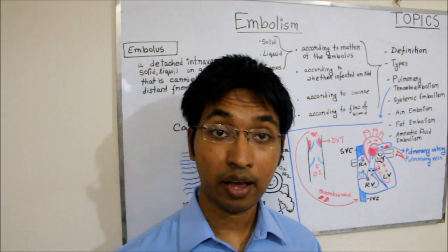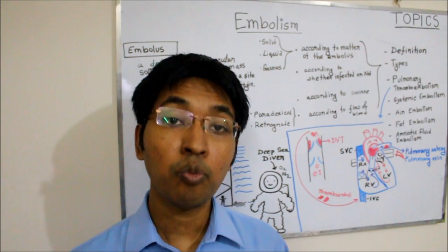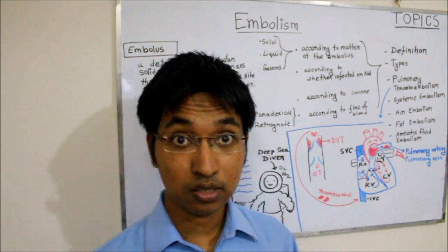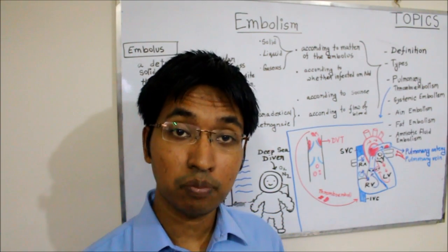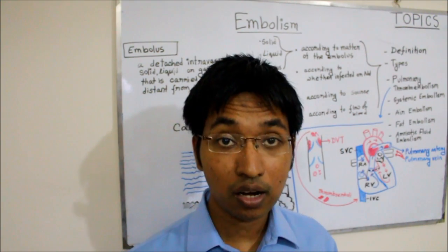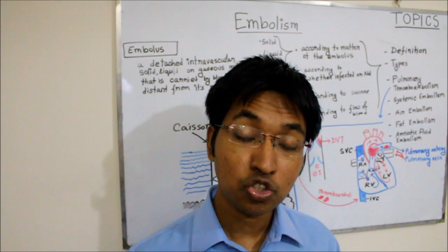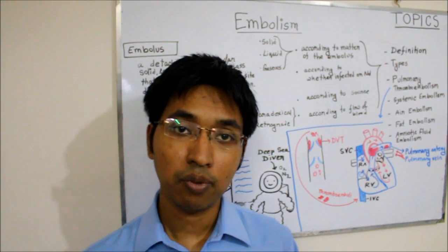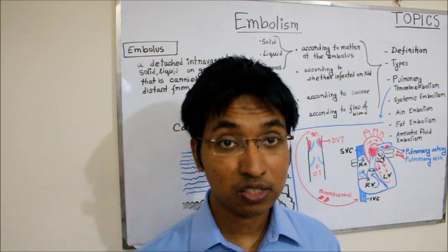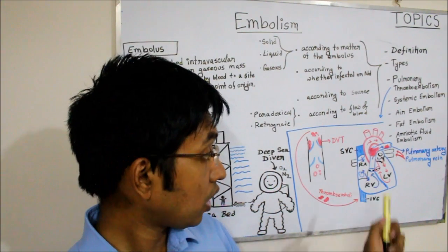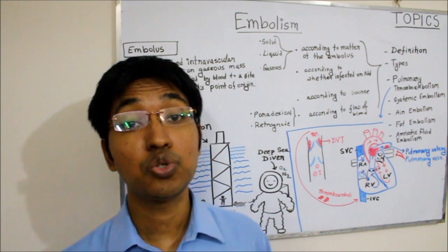If the pulmonary thromboembolism was smaller, or if a large thromboembolism gets fragmented into multiple pieces, it won't get stuck at the bifurcation but will move further along and lodge in the lower lobes of the lungs inside pulmonary vessels due to gravity.